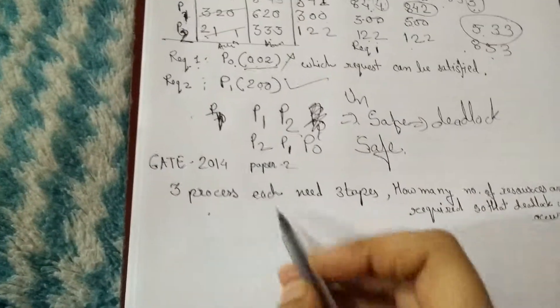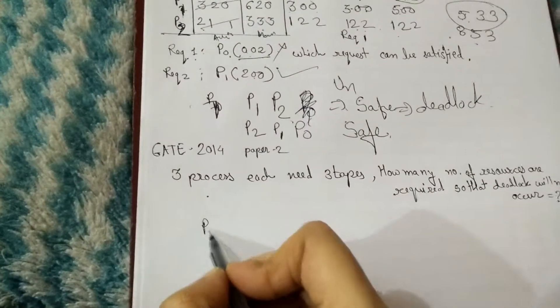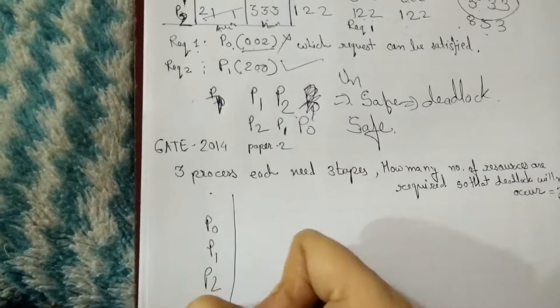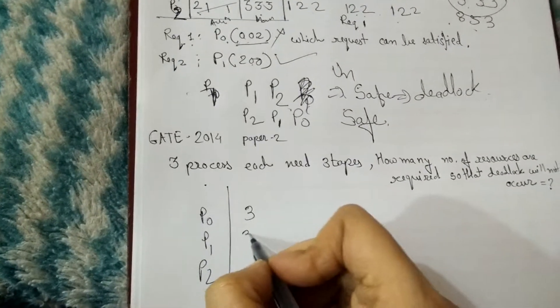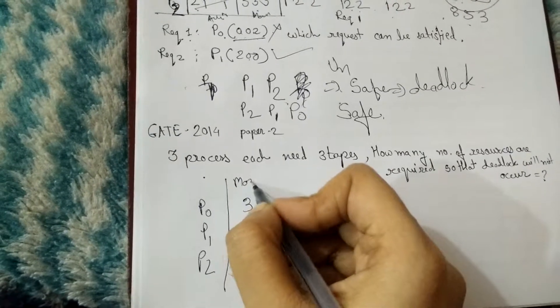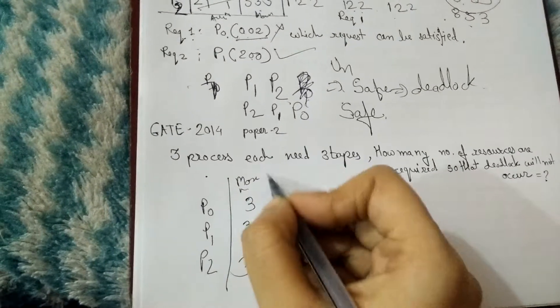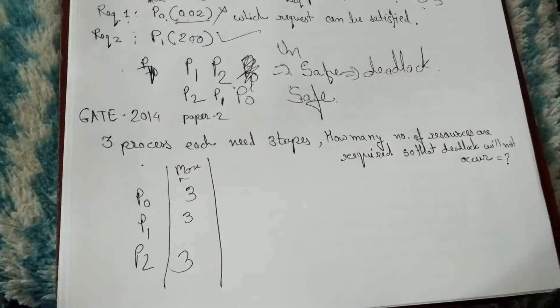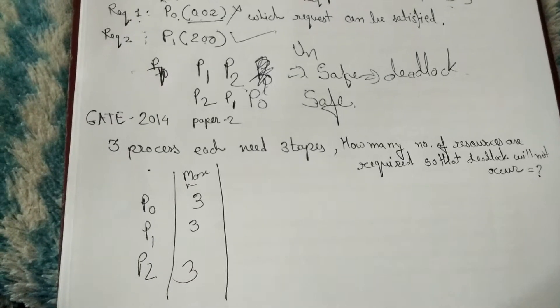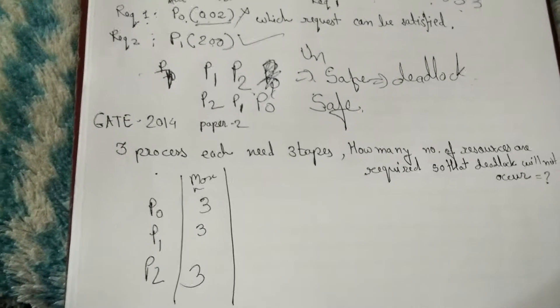Another type of question asked in GATE examinations on deadlock: if there are three processes and each has a maximum need of 3 resources, how many total resources are required so that deadlock will not occur?